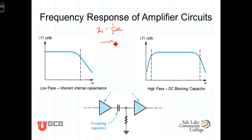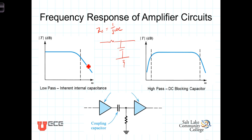At high frequencies, this capacitive impedance tends to create a low impedance path to ground and reduces the gain at higher frequencies, giving it a low-pass characteristic. So the inherent internal capacitance causes the frequency response to die off at higher frequencies.